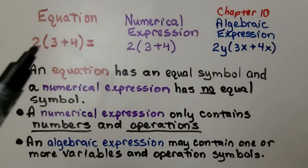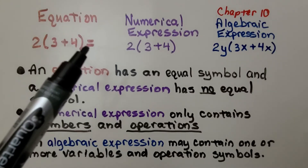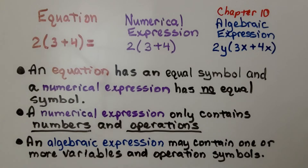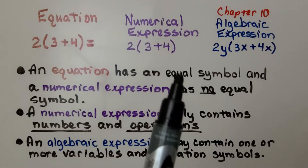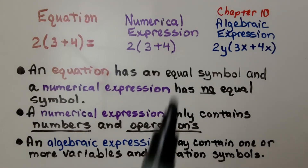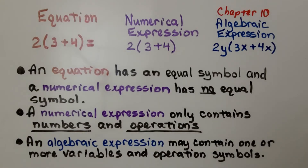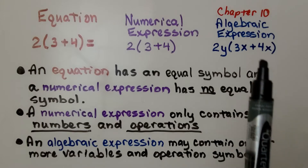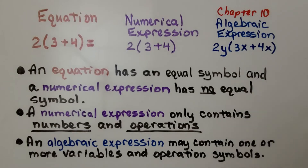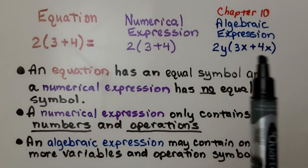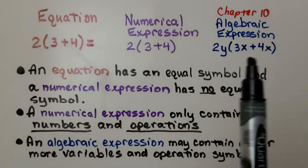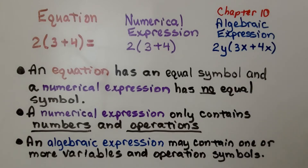An equation has an equal symbol. A numerical expression has no equal symbol and only contains numbers and operations. An algebraic expression may contain one or more variables — those are the letters — and operation symbols.